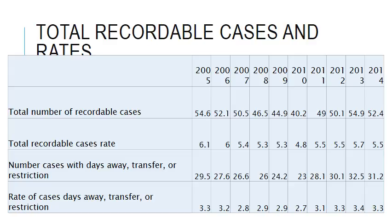This table shows the total number of recordable cases resulting from injury or illness in agriculture. The total number of recordable cases appears to fluctuate from 2005 to 2014. It also shows the number of cases with days away from work, transferred, or restrictions, which are a subset of the total recordable cases. The total number of recordable cases with days away from work, transferred, or restriction shows a pattern of first appearing to decrease, then increase again, ending up around the same level.